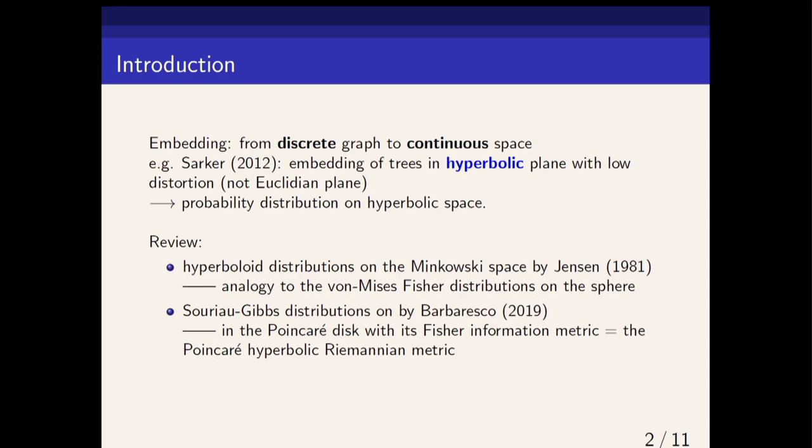Looking at the literature on parametric probability distributions defined on hyperbolic geometry, we find that in the 80s there are papers considering the hyperbolic model, also called the Minkowski space. This paper was basically an analogy of the von Mises-Fisher distribution on the sphere but for the hyperbolic model of hyperbolic geometry.